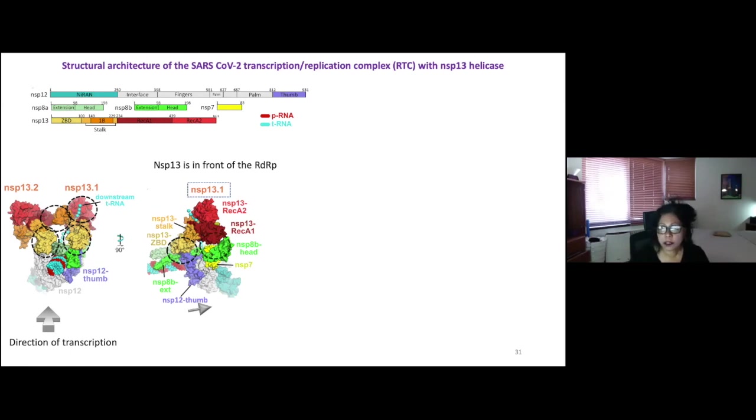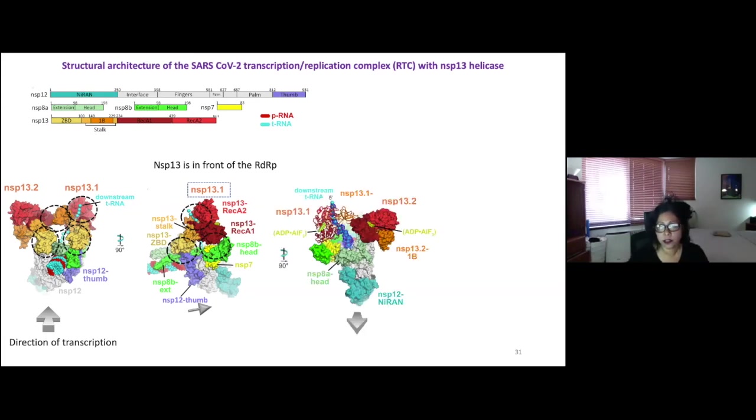Second interaction we observe is with the head of NSP8-B and NSP7. So this is in line with the studies I showed you, the biochemical studies I showed you before with the two hybrid studies and the pulldown. And then the last interaction is with the RNA that's threading through. So there were three separate interactions observed with 13-1.